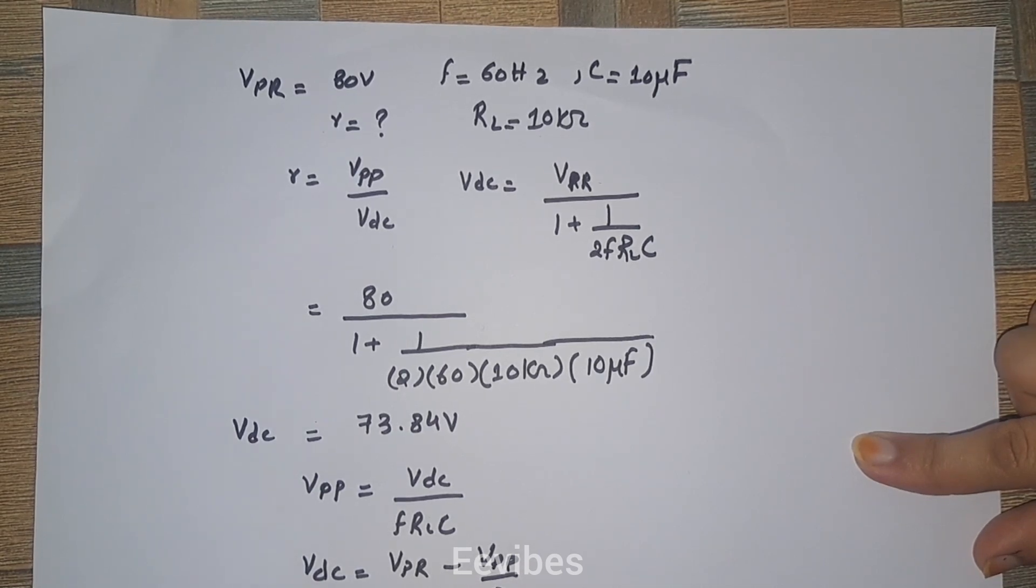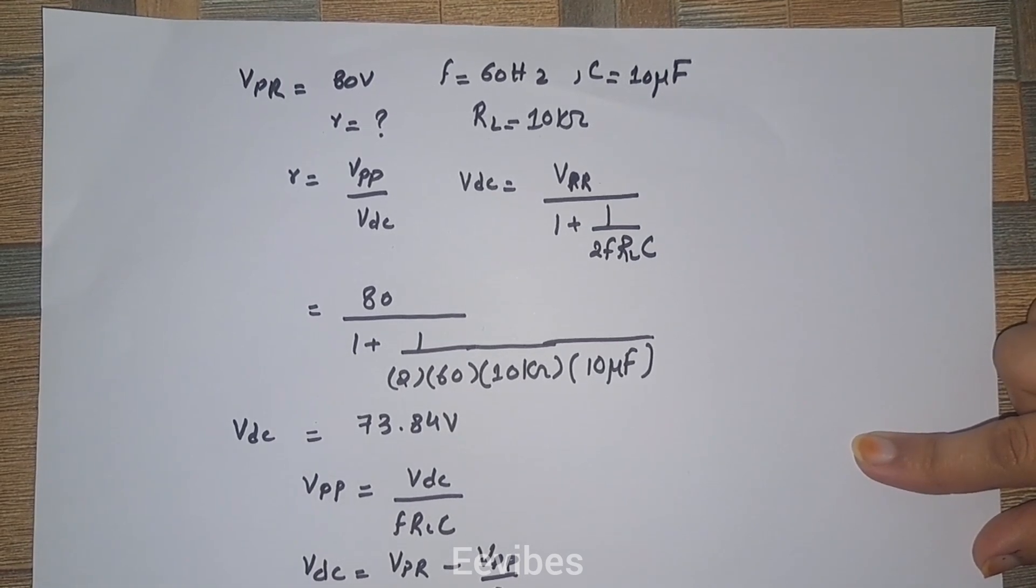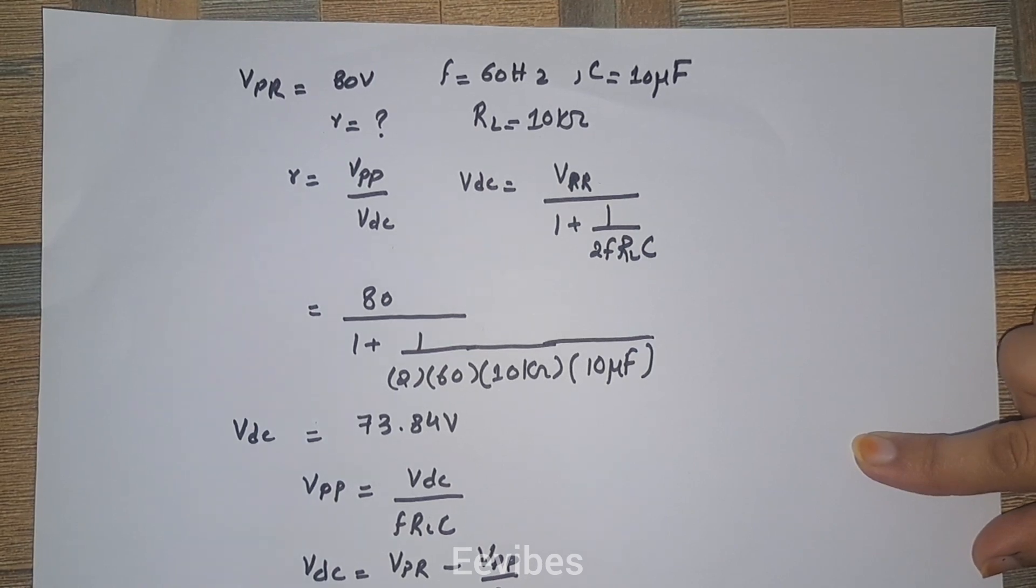We can simplify this expression. If you take the LCM, you will see that it will be 2V DC is equal to 2V PR minus V peak to peak.